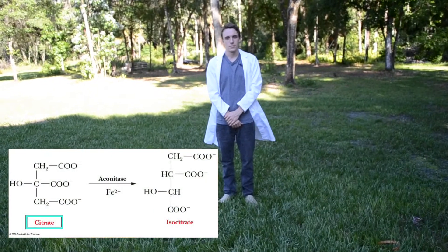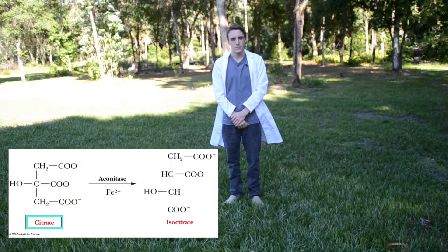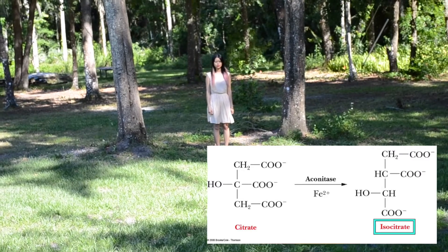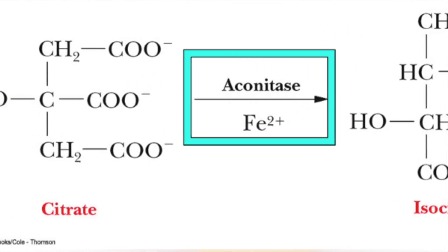The next step is to take citrate and turn it into isocitrate, using aconitase.